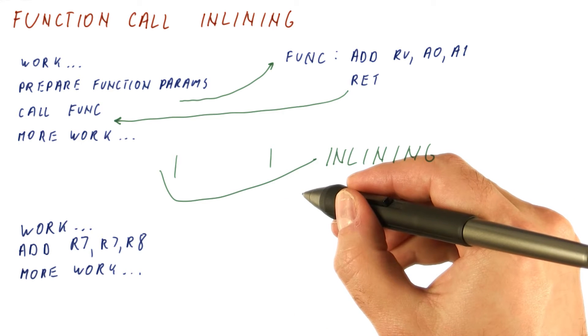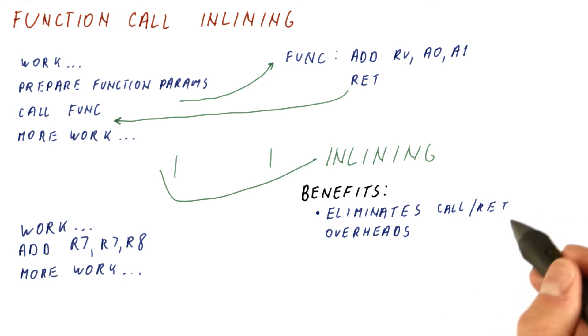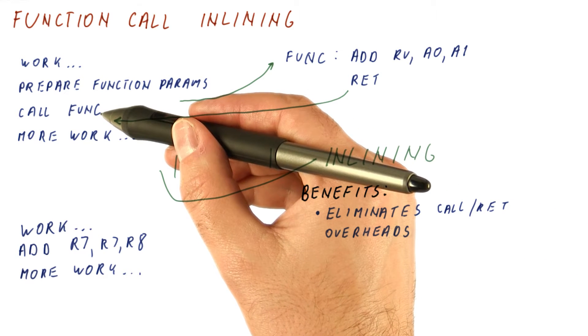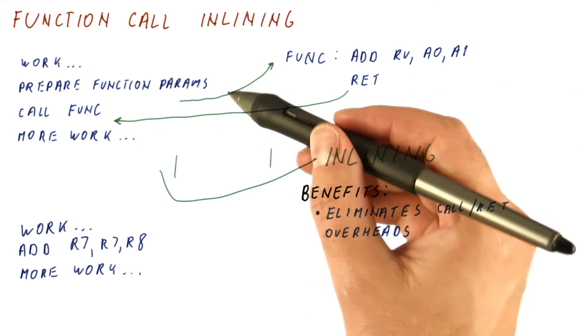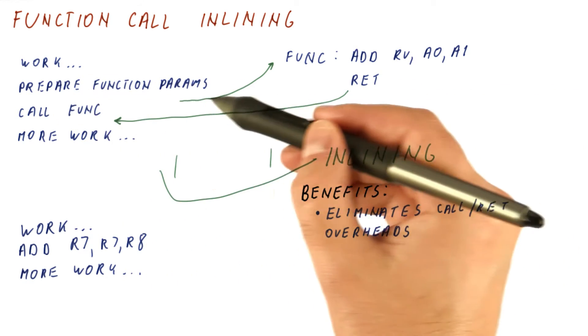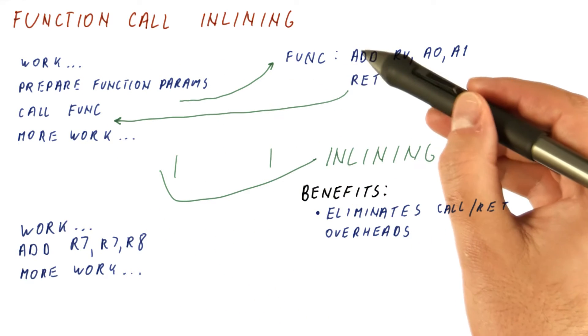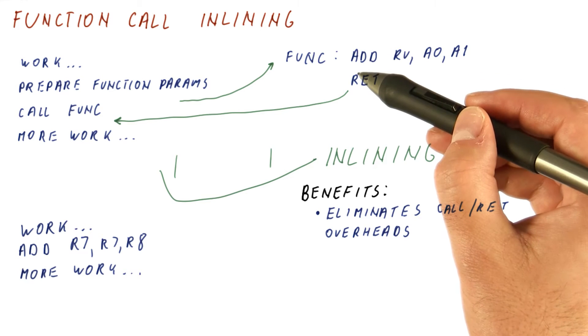The first benefit of function call inlining is that it eliminates the calling and returning overheads, which include not only the function call and return instructions themselves, but also the code that prepares the function parameters according to the calling convention, and the code that possibly in the function itself needs to, for example, pop parameters from the stack and so on.